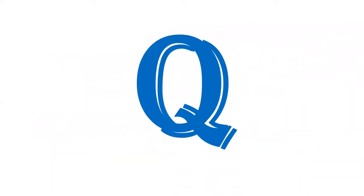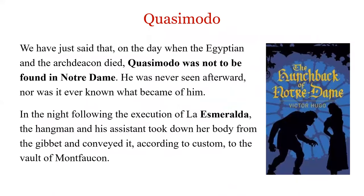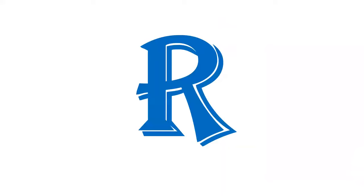Q is for Quasimodo — one of the famous characters in French literature. He appears in Victor Hugo's novel The Hunchback of Notre-Dame. Quasimodo is a hunchback who falls in love with the gypsy Esmeralda, but it is a sad story: Esmeralda is executed, and Quasimodo disappears shortly afterward at the end of the novel.